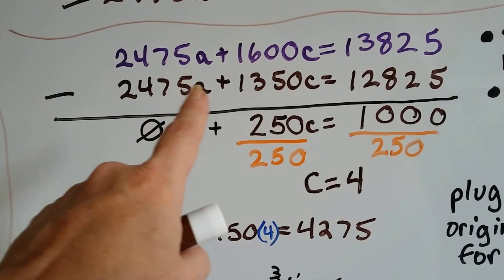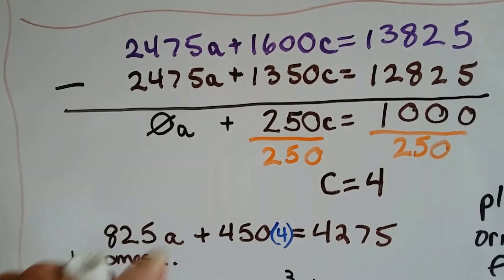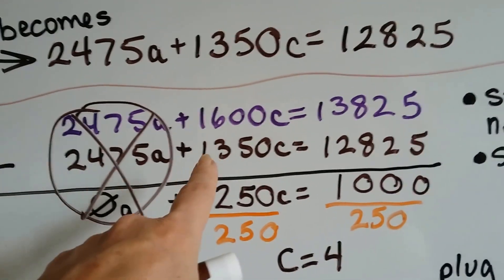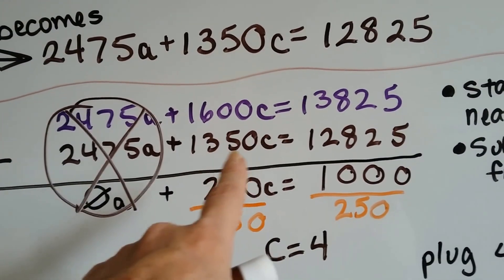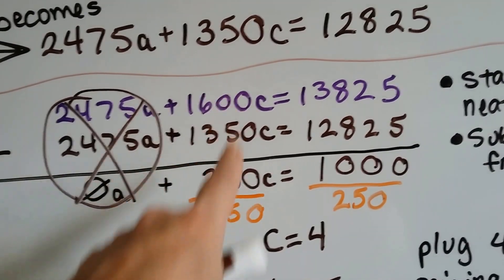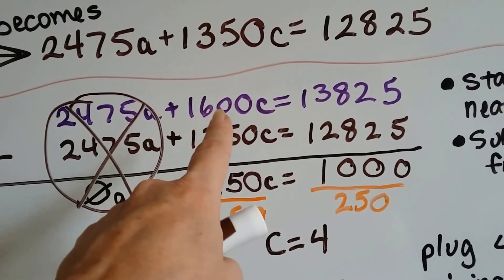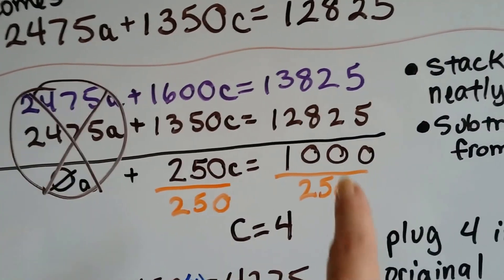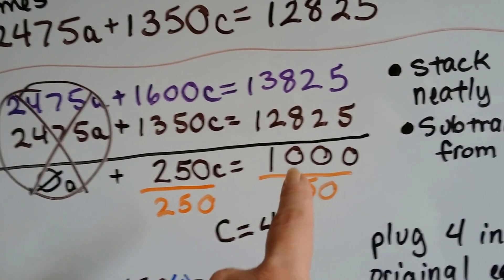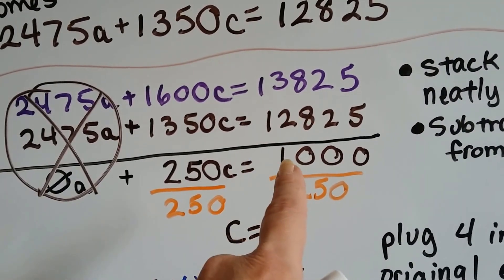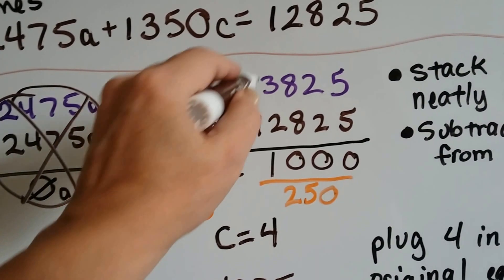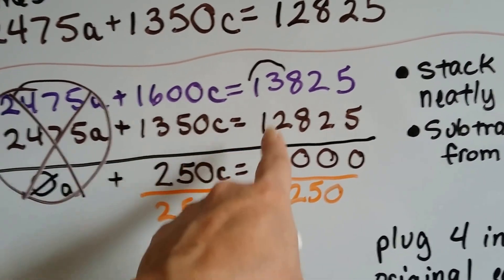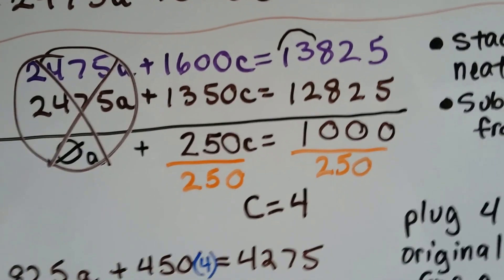2475A minus 2475A is going to give us 0A, so now this has been eliminated. 1600C minus 1350C is 250C. And we can see that 13 take away 12 is 1. We can actually subtract these by combining the place values, 13 take away 12 is 1.